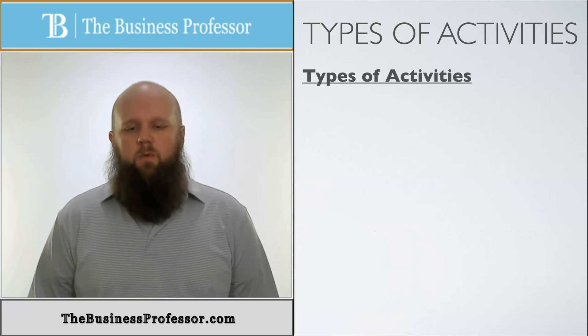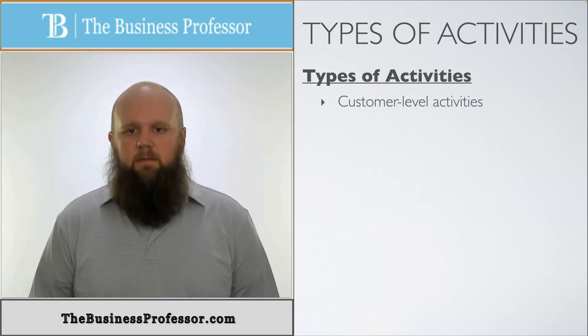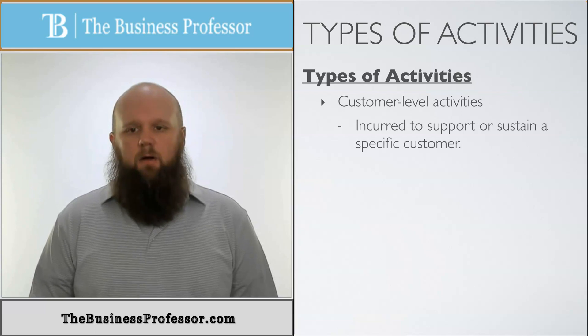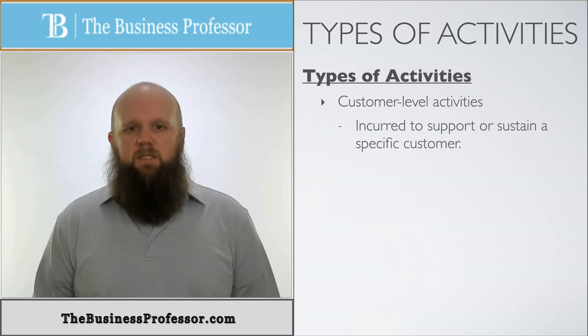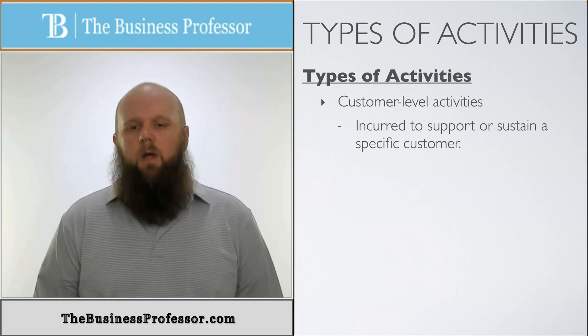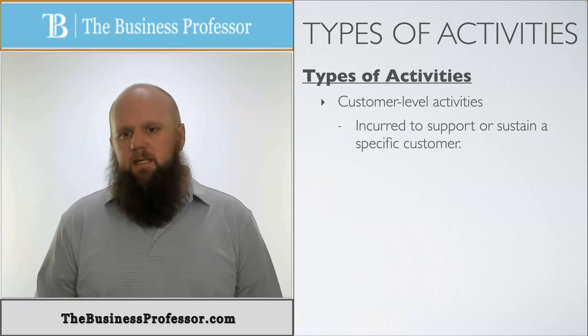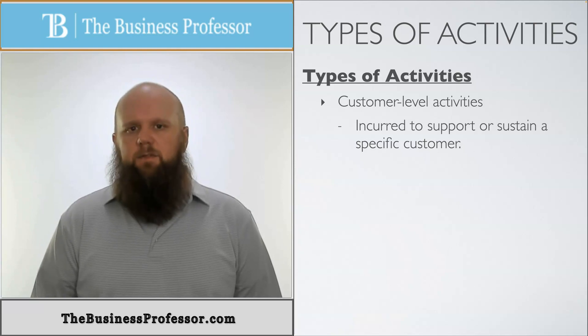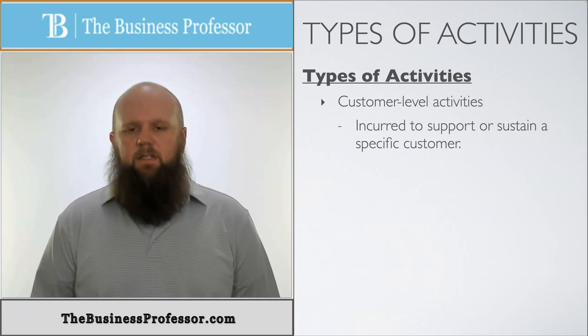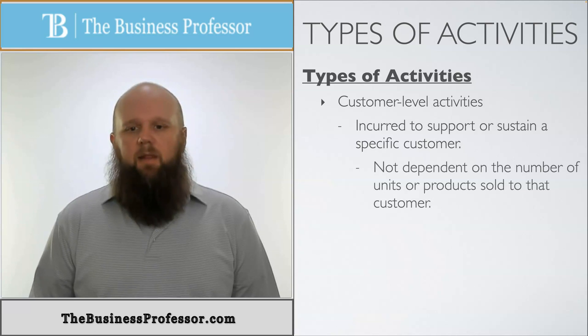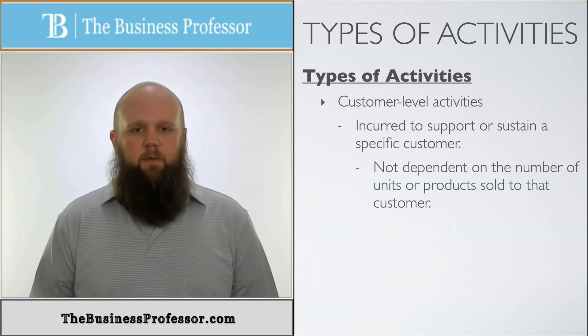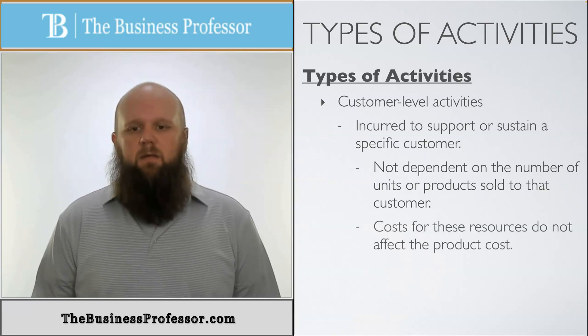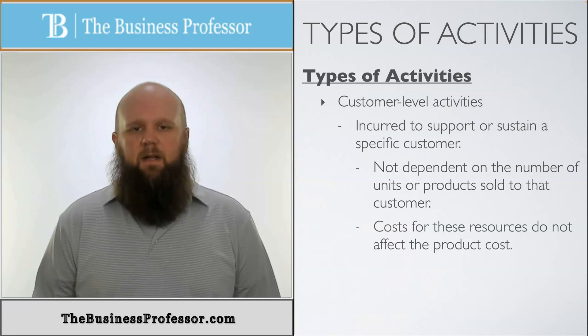The fourth one is what we call customer-level activities. These are activities incurred to support and sustain specific customers. So we're outside of the product realm now, we're now into the selling and admin side. But these are still costs and activities that we have to look at. These are not dependent on the number of units or the products sold to a customer, because it has nothing to do with production. The costs for these resources do not affect product cost.